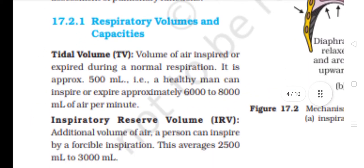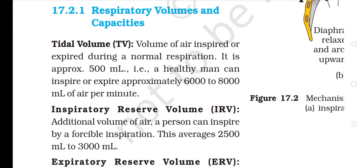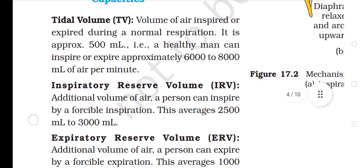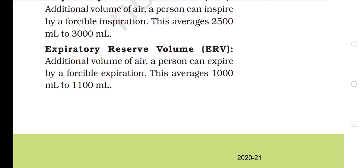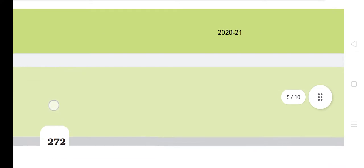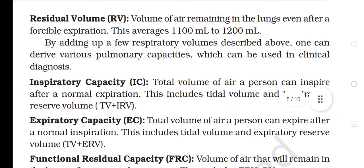17.2.1 Respiratory Volumes and Capacities. Tidal Volume: Volume of air inspired or expired during a normal respiration. It is approximately 500 ml; a healthy man can inspire or expire approximately 6,000 to 8,000 ml of air per minute. Inspiratory Reserve Volume: Additional volume of air a person can inspire by a forcible inspiration. This averages 2,500 ml to 3,000 ml. Expiratory Reserve Volume: Additional volume of air a person can expire by a forcible expiration. This averages 1,000 ml to 1,100 ml. Residual Volume: Volume of air remaining in the lungs after a forcible expiration. This averages 1,100 ml to 1,200 ml. By adding up a few respiratory volumes, one can derive various pulmonary capacities which can be used in clinical diagnosis.